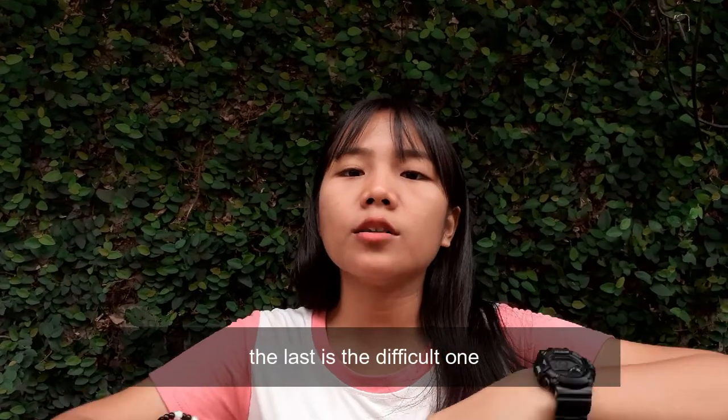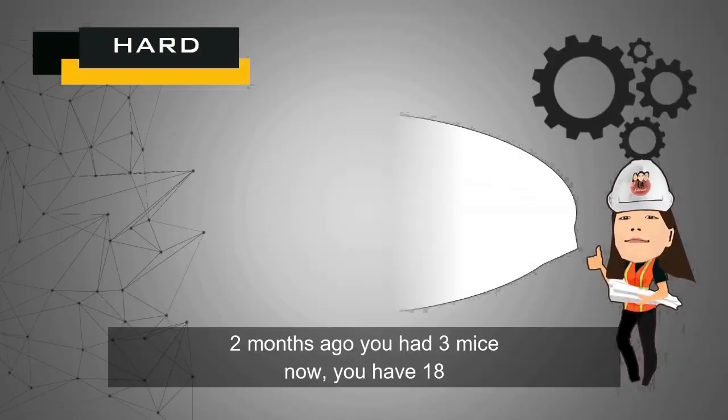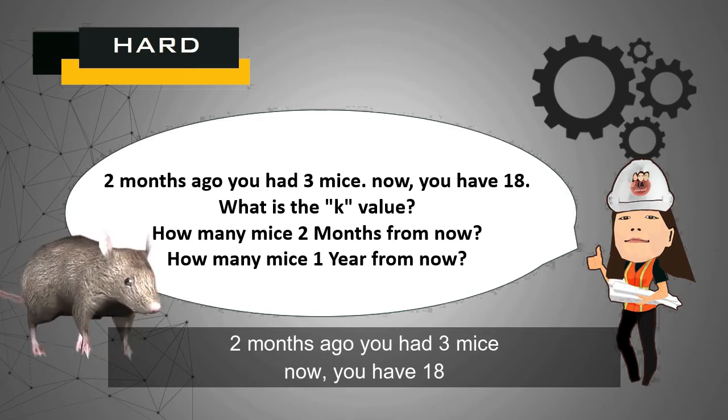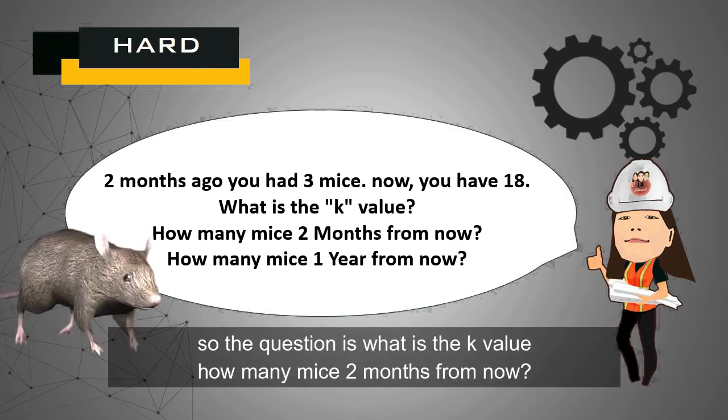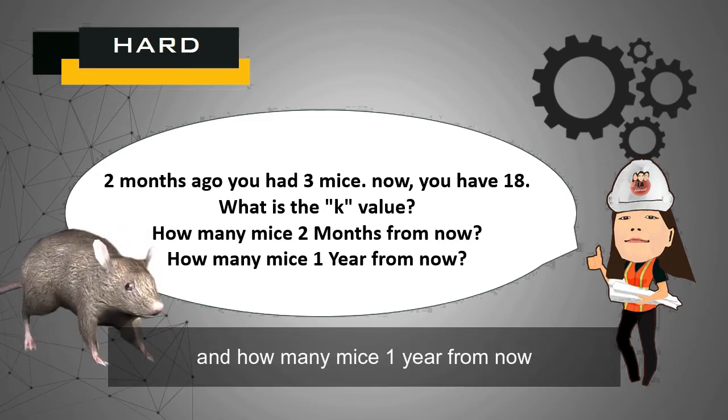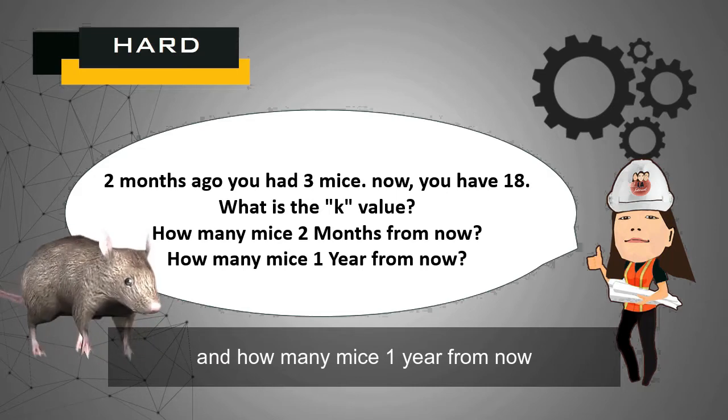The last is the difficult one. Two months ago, you had 3 mice. You now have 18. The questions are: what is the k value? How many mice 2 months from now? And how many mice 1 year from now?